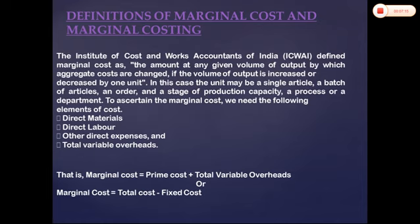The equation for marginal cost is: Marginal Cost = Prime Cost + Total Variable Overheads. Prime cost includes direct material, direct labor, and direct expenses. Alternatively: Marginal Cost = Total Cost minus Fixed Cost.